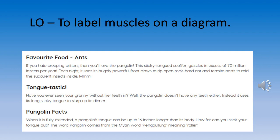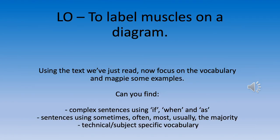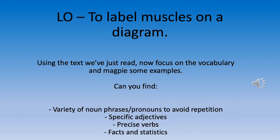Using the text we've just read, now focus on the vocabulary and magpie some examples. Can you find: complex sentences using 'if', 'when', and 'as'; sentences using 'sometimes', 'often', 'most', 'usually', or 'the majority'; and technical subject-specific vocabulary? Also find: a variety of noun phrases or pronouns to avoid repetition, specific adjectives, precise verbs, and facts and statistics.